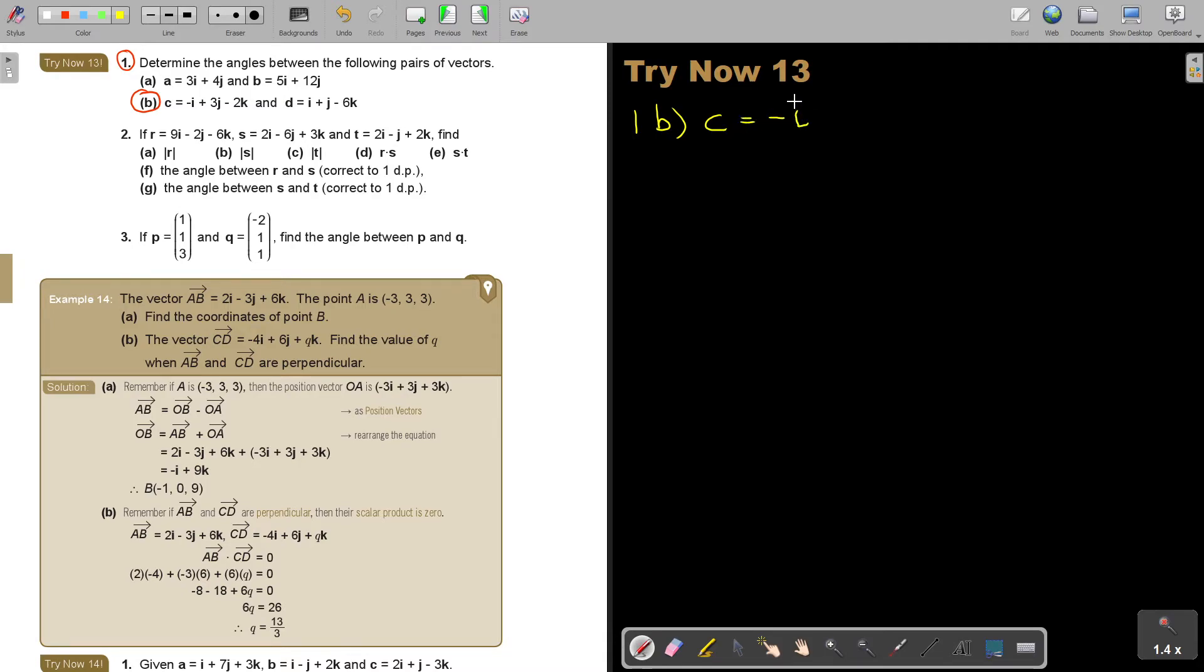So it's negative I plus 3J minus 2K. And then number D, it is I plus J minus 6K. And now I'm going to find the scalar product. First let's find the scalar product of CD, C dot D. So it's going to be negative 1 and 1 plus 3 and 1 plus negative 2 and negative 6. And that's going to be negative 1 plus 3, oh sorry, the bracket, plus 12. So it's 15 and that's going to be 14.